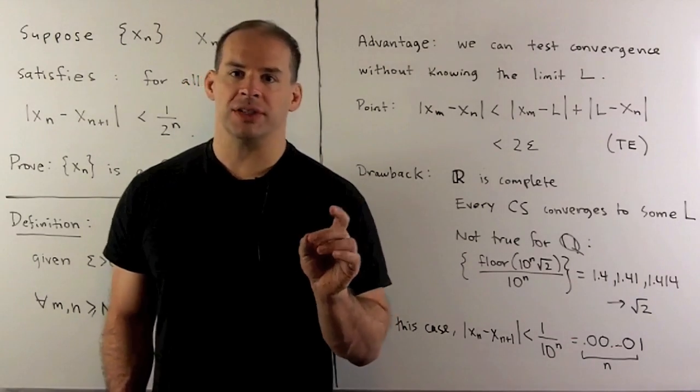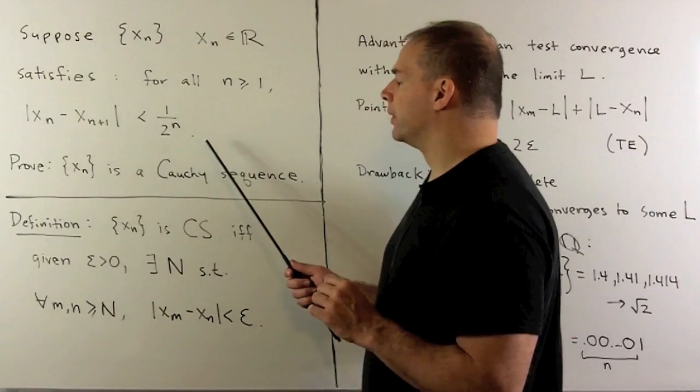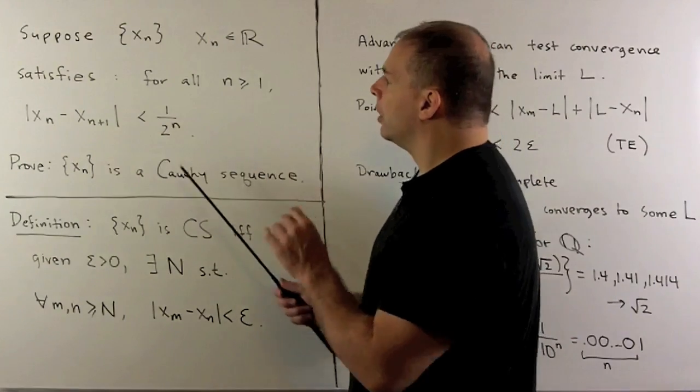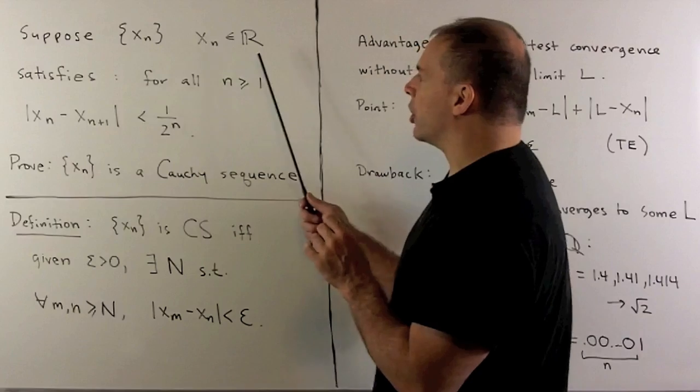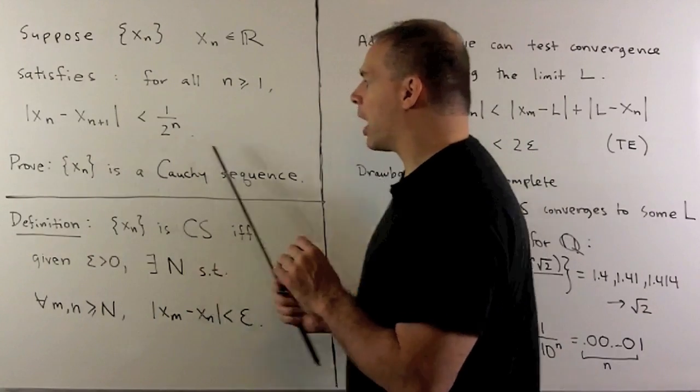That's useful, for instance, in the problem we have at hand. There's no mention made of a limit, but we can still prove that the sequence converges when we're just given a general property.